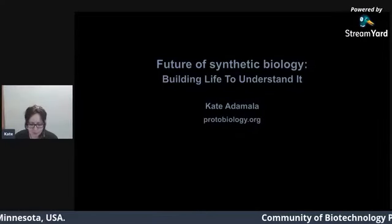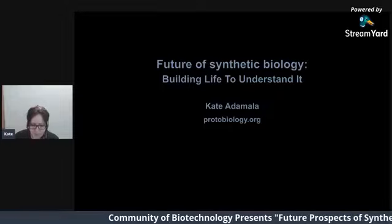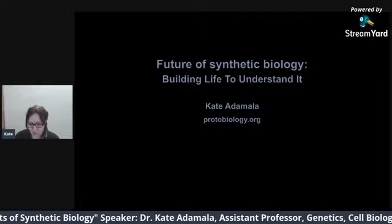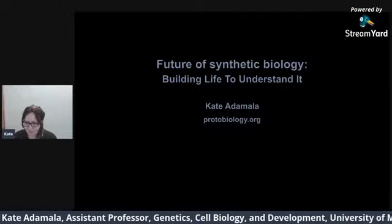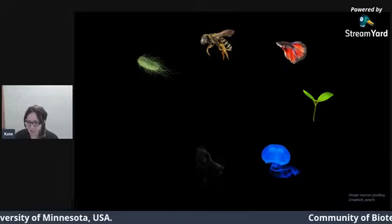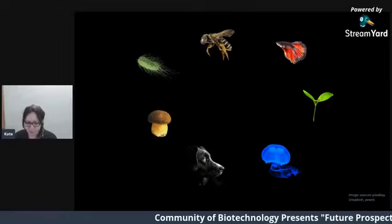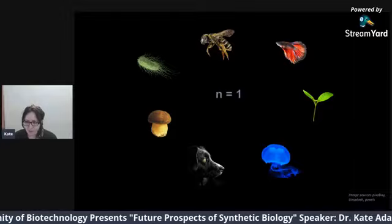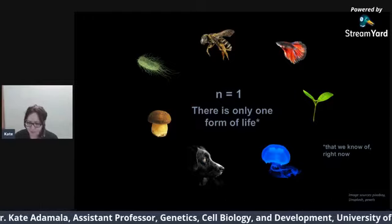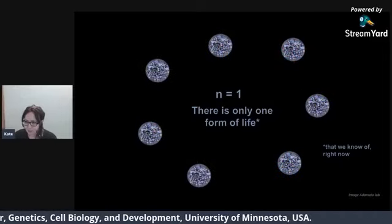What I want to talk about today is the next frontier in synthetic biology — building cells from scratch — so we can understand how natural cells work, but also so we can have more examples of cells, more types in which biology can work. As a biochemist, we look at incredibly complex natural cells and think about how to modify and understand them. When you look at the incredible diversity of life around us, there are so many different forms of living organisms. But from a scientific point of view, there is only one life form on Earth right now — one type of biology.